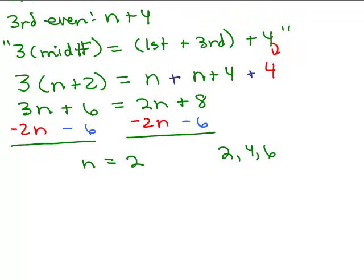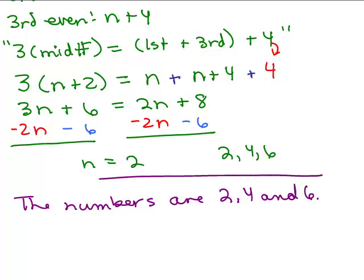And then we write our answer in words because it's a word problem. The numbers, don't ever leave it as just n equals 2 because there was no n in the problem. You defined what n was so that you could figure out the answer to the problem. The numbers are 2, 4, and 6. And there we go.